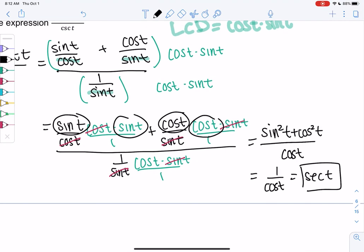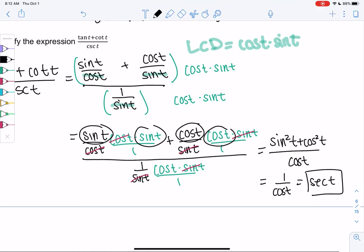And we have simplified this crazy expression tangent of t plus cotangent of t over cosecant of t. And it's just simply secant. So we just want to be able to simplify these. Oftentimes we can write them in better forms.